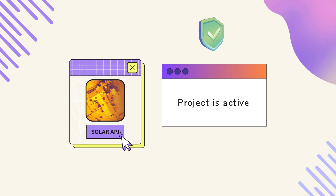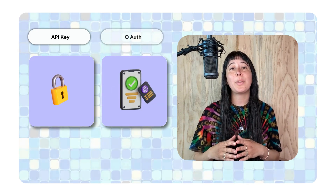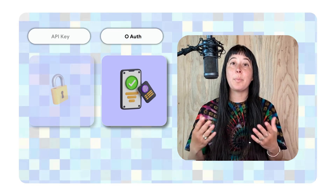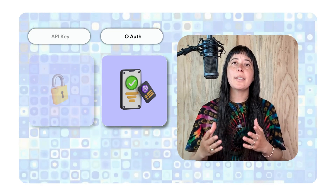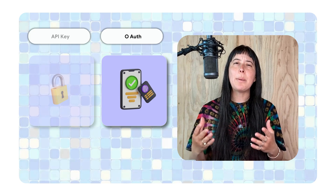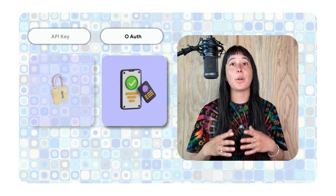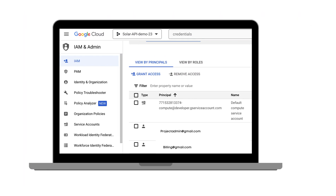Congratulations, you've successfully set up your project. However, it's important to call out that Google also has another security tool called OAuth. OAuth is mostly for big projects and applications. If you're working on something like that, note it's a bit more complex, but the trade-off is that you get even tighter controls over who can use your data. It's recommended to create multiple project owners and billing administrators so that you'll always have someone with roles available on your team.